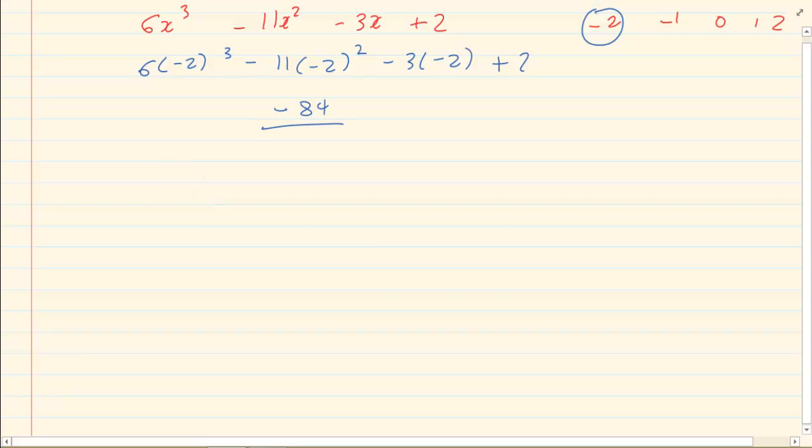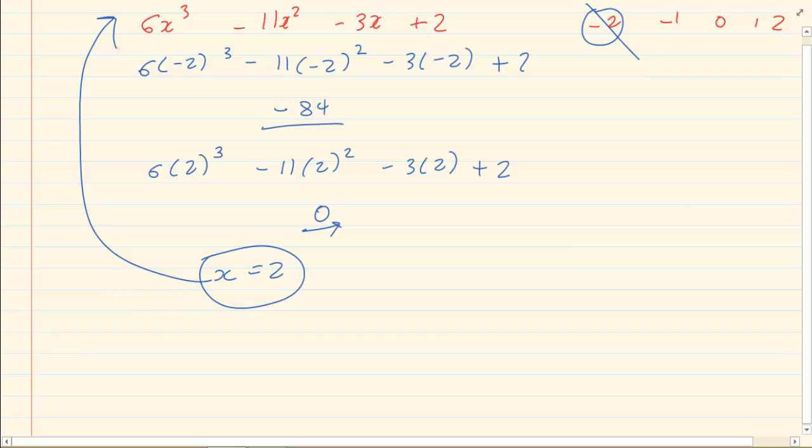Let us try 2. Now if we substitute 2, we get 0, which immediately tells us if x is equal to 2, then there is a factor of the expression 6x cubed minus 11x squared minus 3x plus 2. So if we were to make x equal to 2 into an expression, it will become x minus 2.